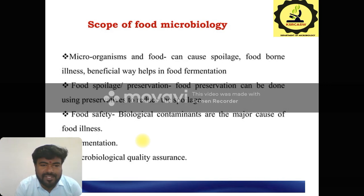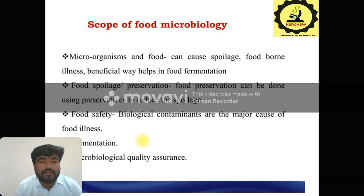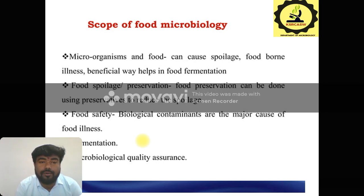At the same time, food safety is important for food microbiological studies. First of all, biological contaminants are the major causes of food illness. Biological contaminants means humans during handling time and also some microorganisms will spoil the food production process. These biological contaminants are the major cause of food illness. And also using some fermentation methods, microbiological quality assurance is also important.